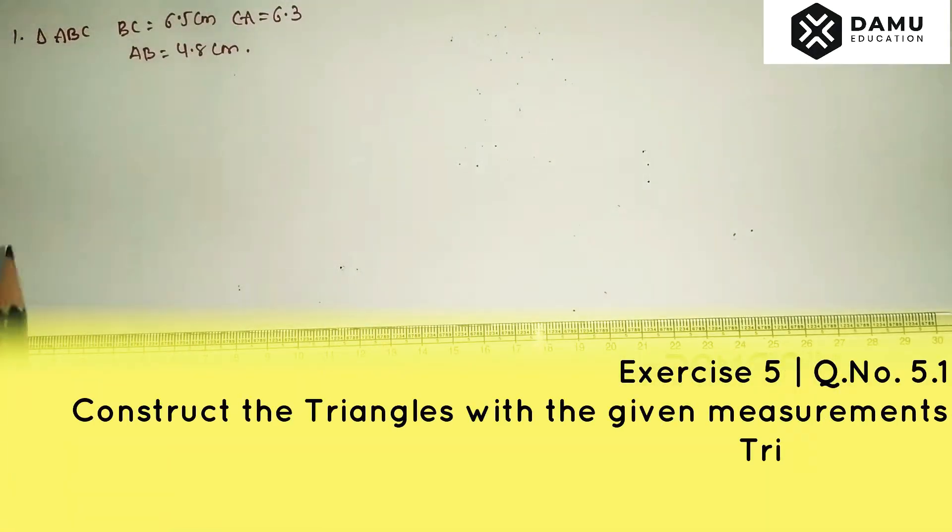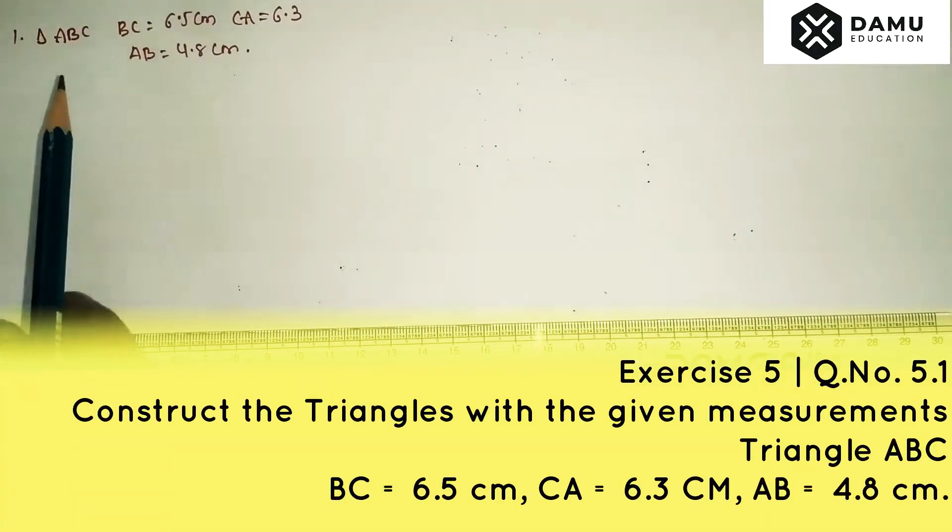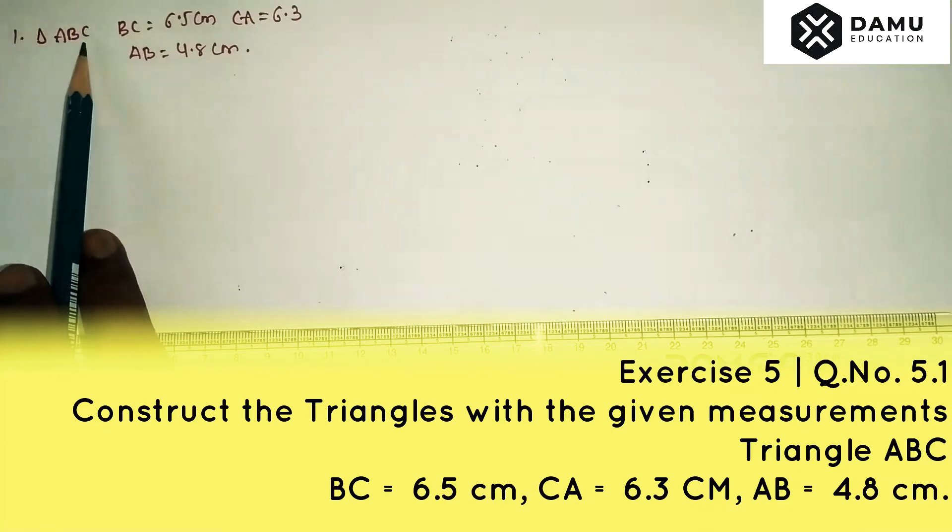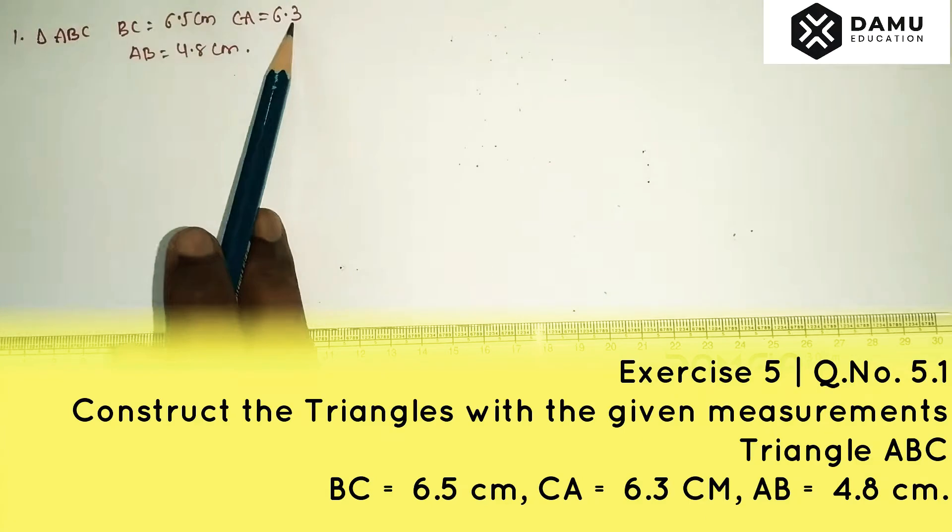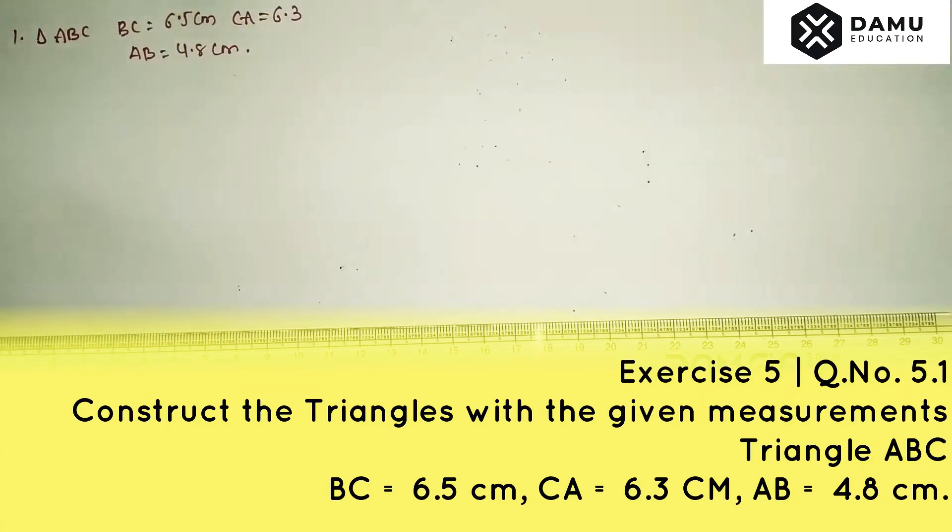In this session we are going to discuss triangle construction. Triangle ABC where BC equals 6.5 cm, CA equals 6.3 cm, and AB equals 4.8 cm.